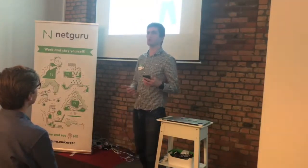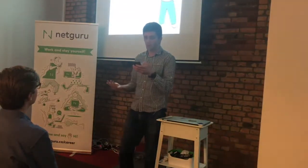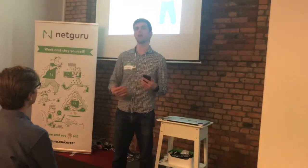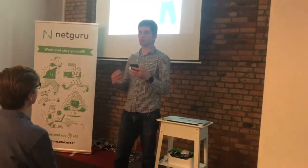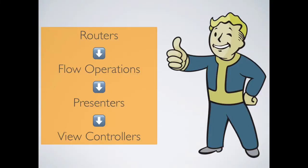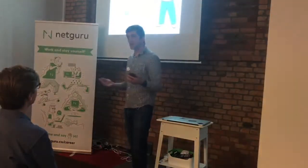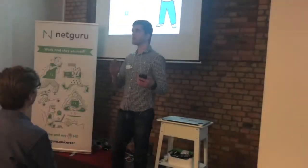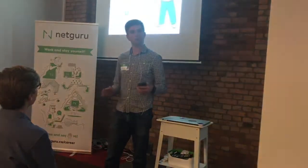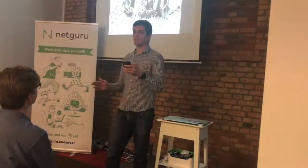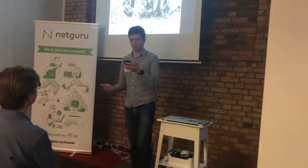There were a lot of good things about it and I was quite proud of it. We used objects called routers, and routers knew of flow operations — they contained all of the flow operations. The flow operations knew of presenters from the Viper side, and presenters knew of view controllers. View controllers, as they should in any application, knew nothing. So it's a great architecture, right? Everything was clean, following a good pattern. But it ended up being a problem for us.